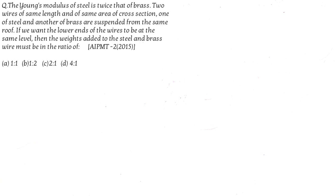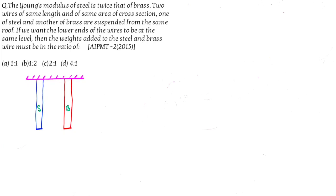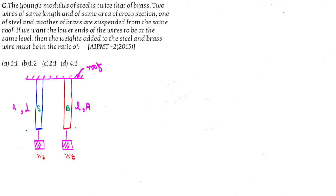In the next question, there are two rods — one of steel and another of brass. Young's modulus of steel is twice that of brass. Both rods have length l and area of cross section A, attached to the same roof. Two masses W_s and W_b are attached, and the extension is the same for both rods.